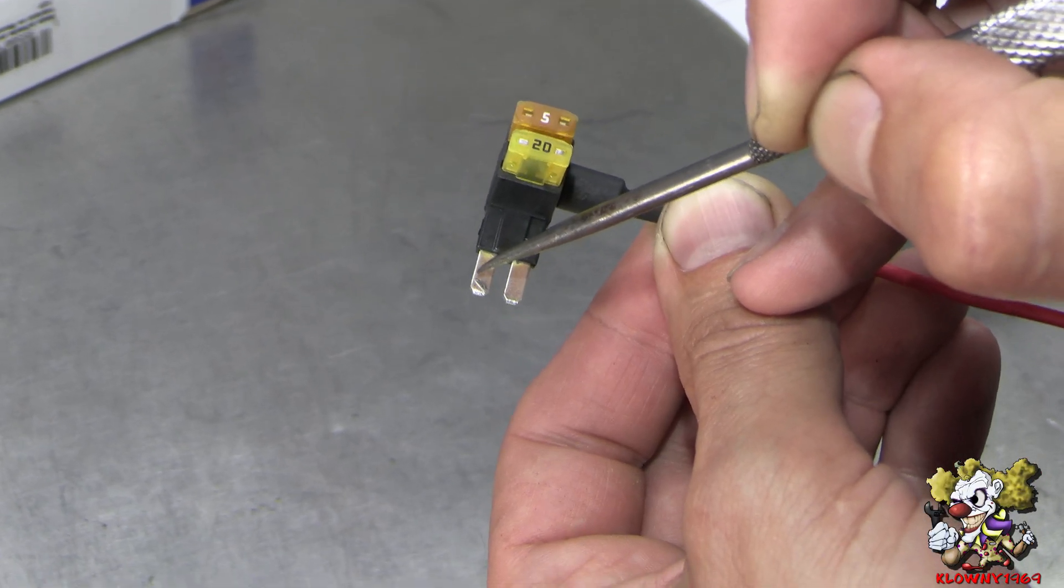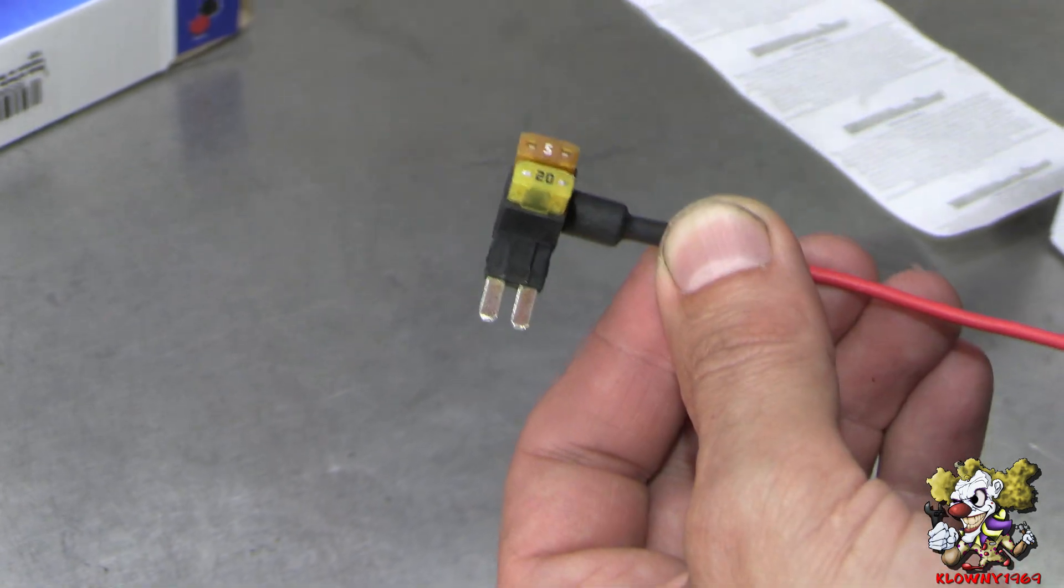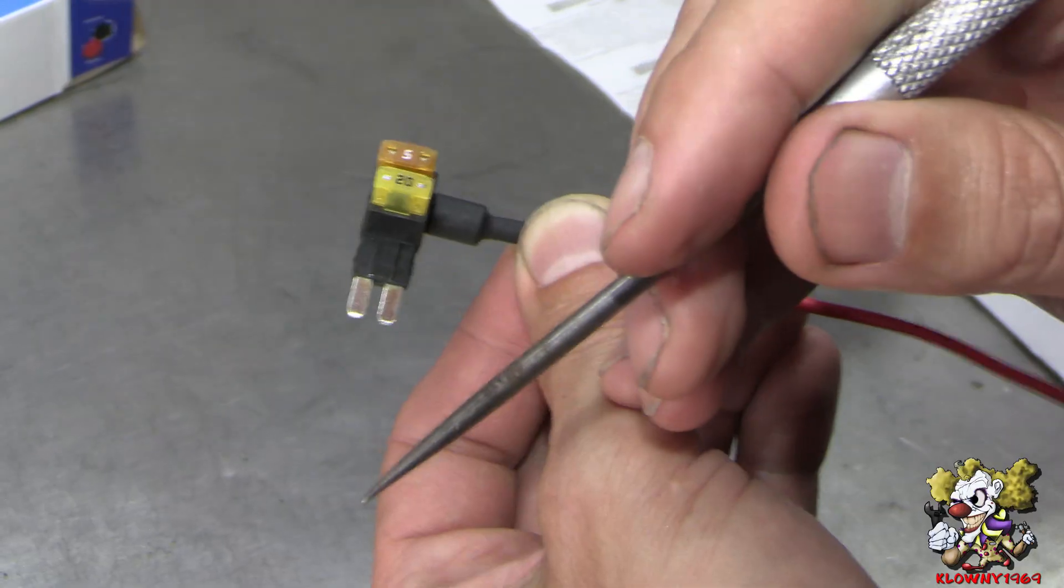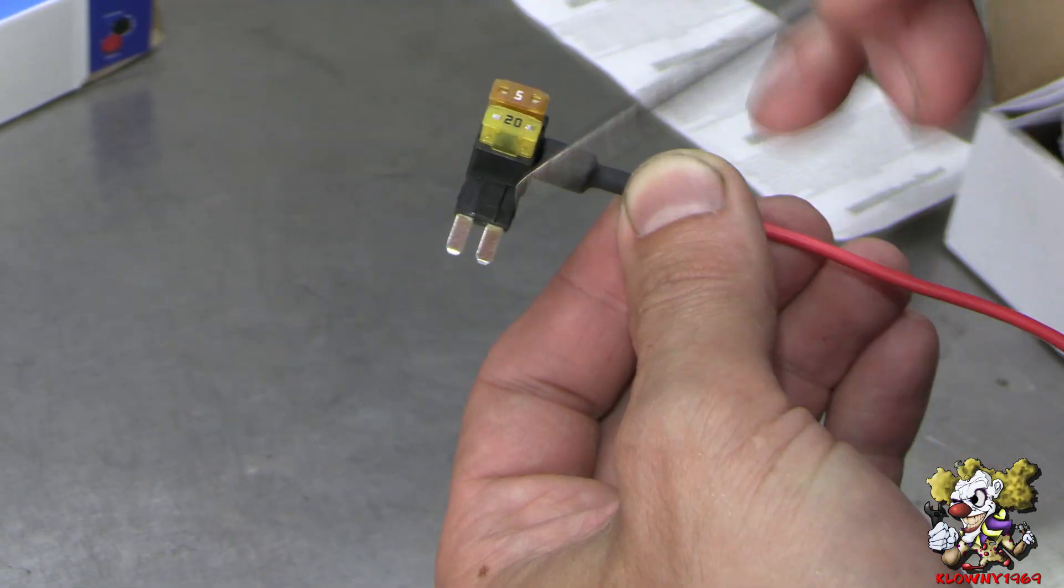Now if you're not tapping into a switched on ignition source and it's on all the time, just take the fuse out and see which one has power. When it has power, you put this side on that one because this is directional.